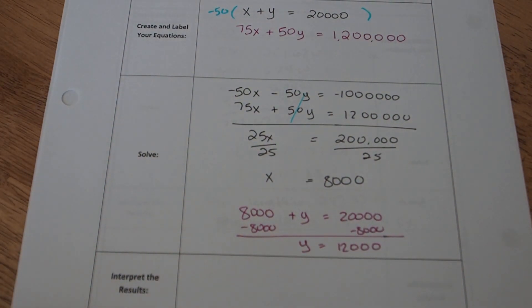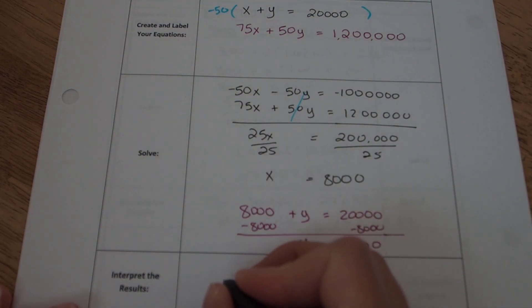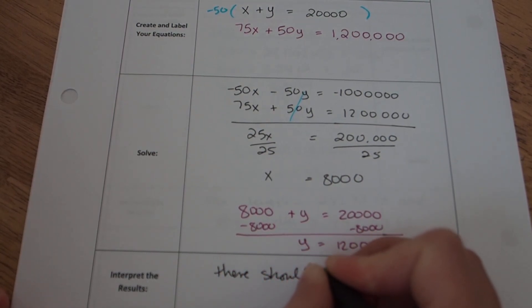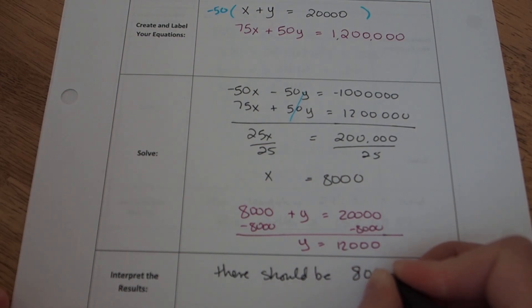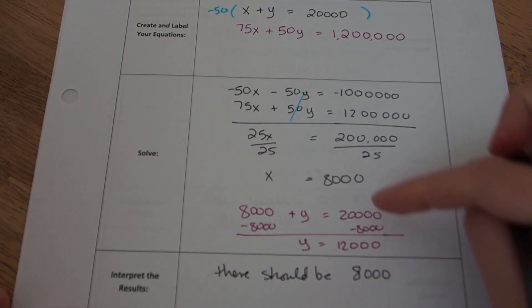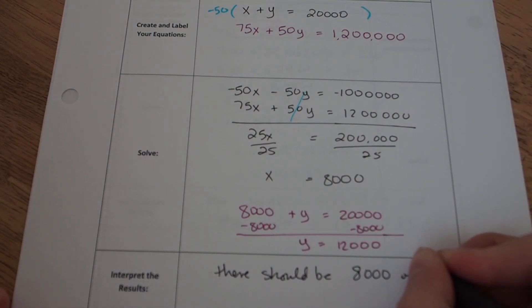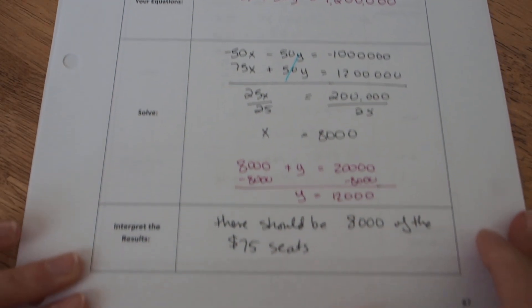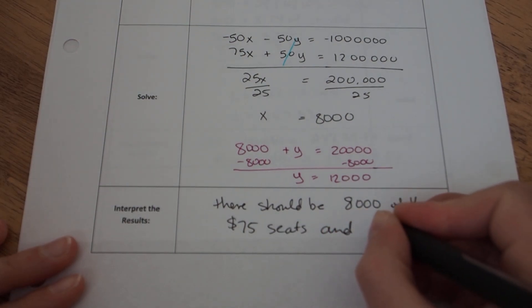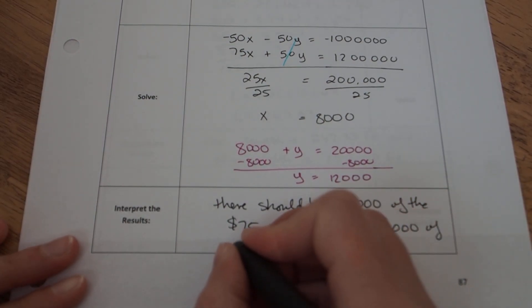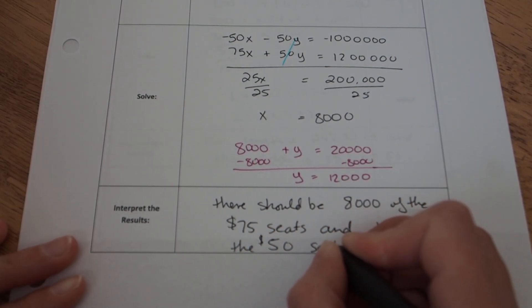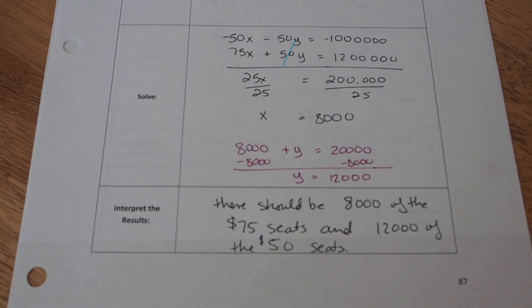So in conclusion, there should be 8,000 of the $75 seats and there should be 12,000 of the $50 seats if they want it to sell out.